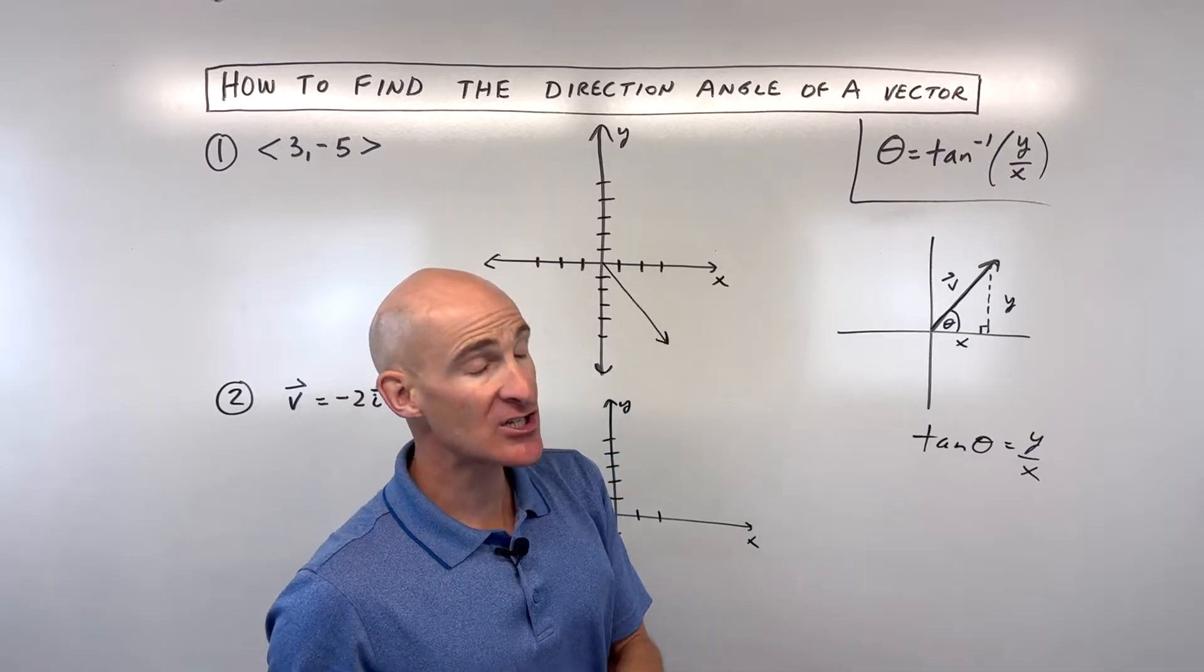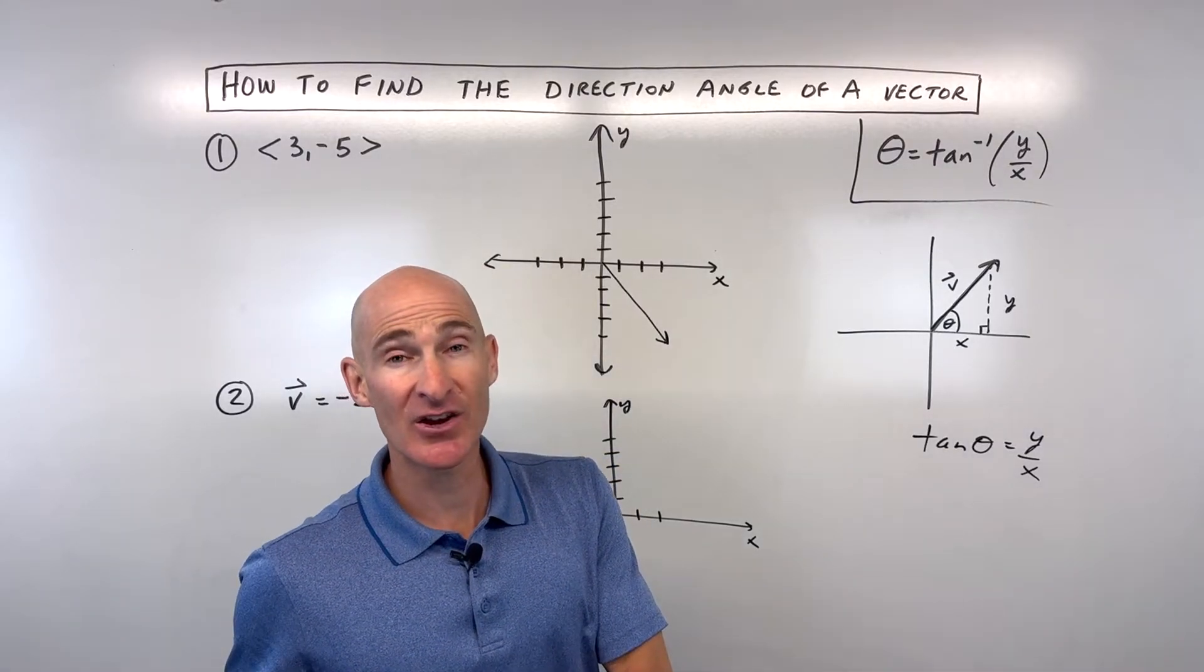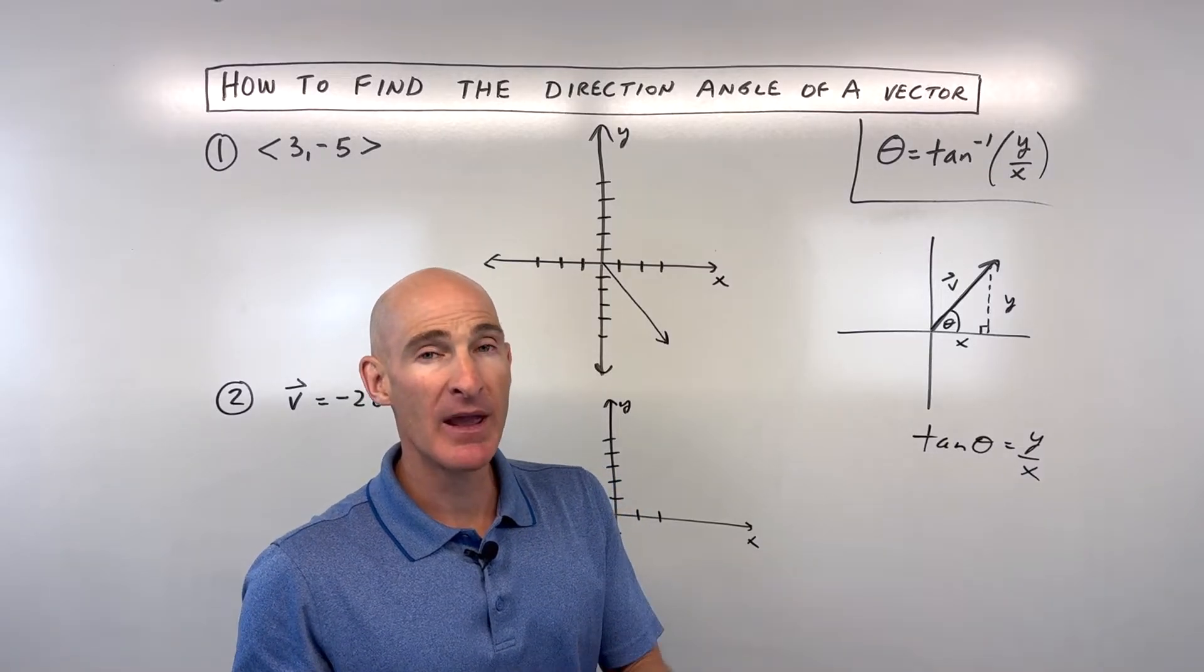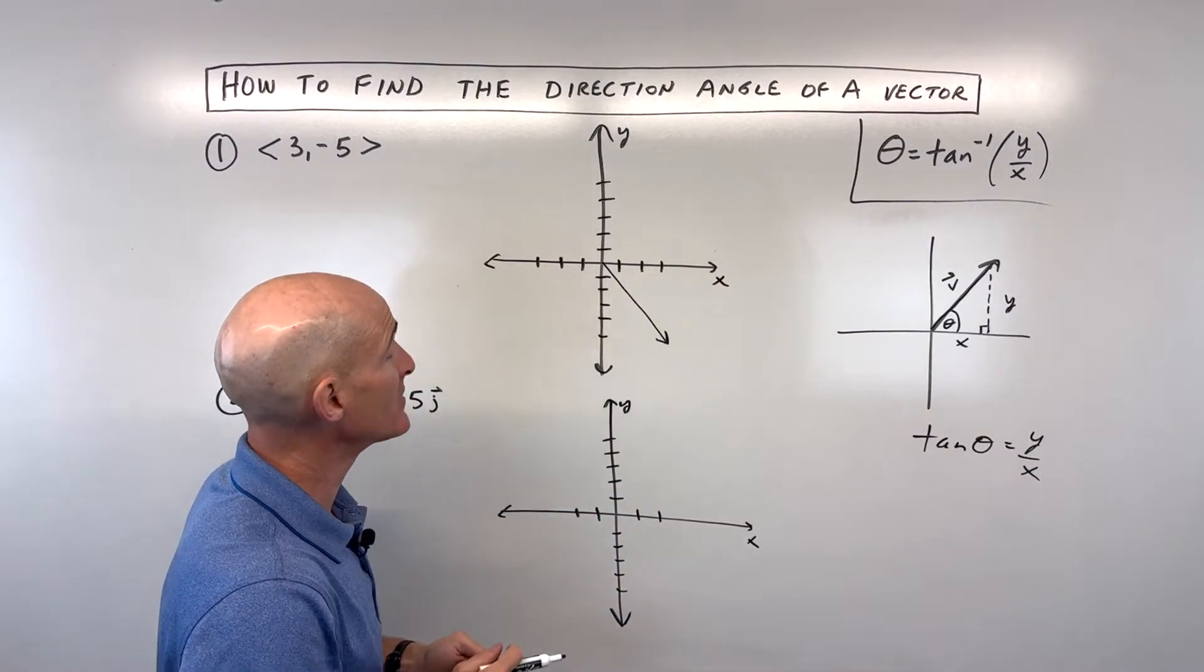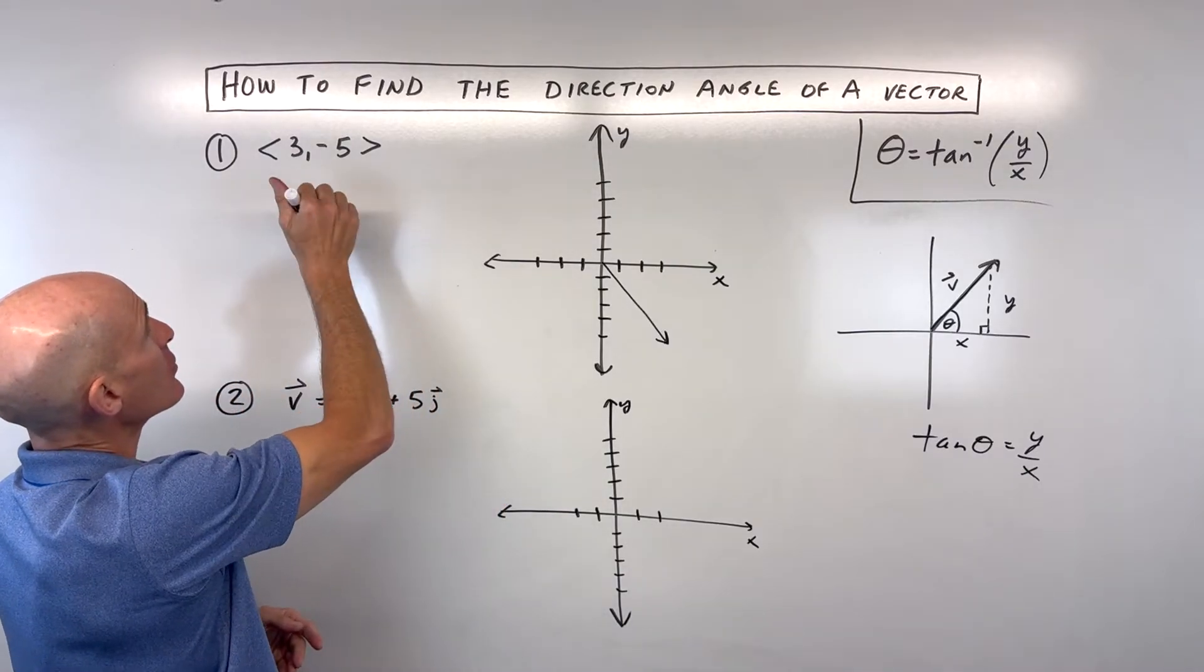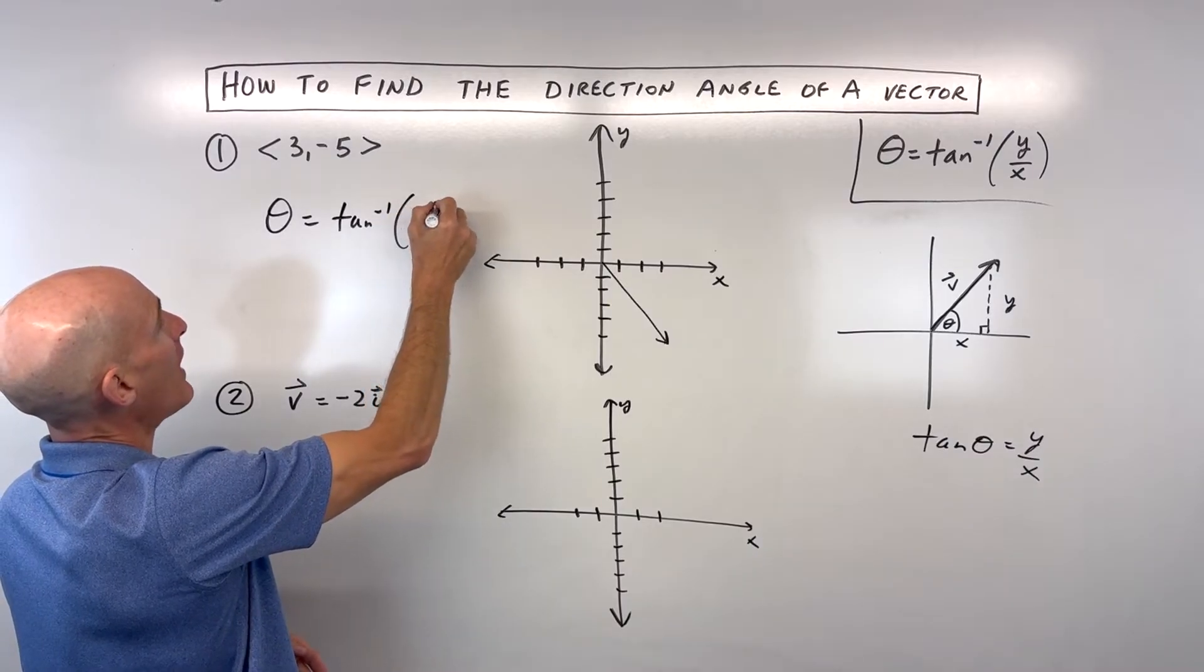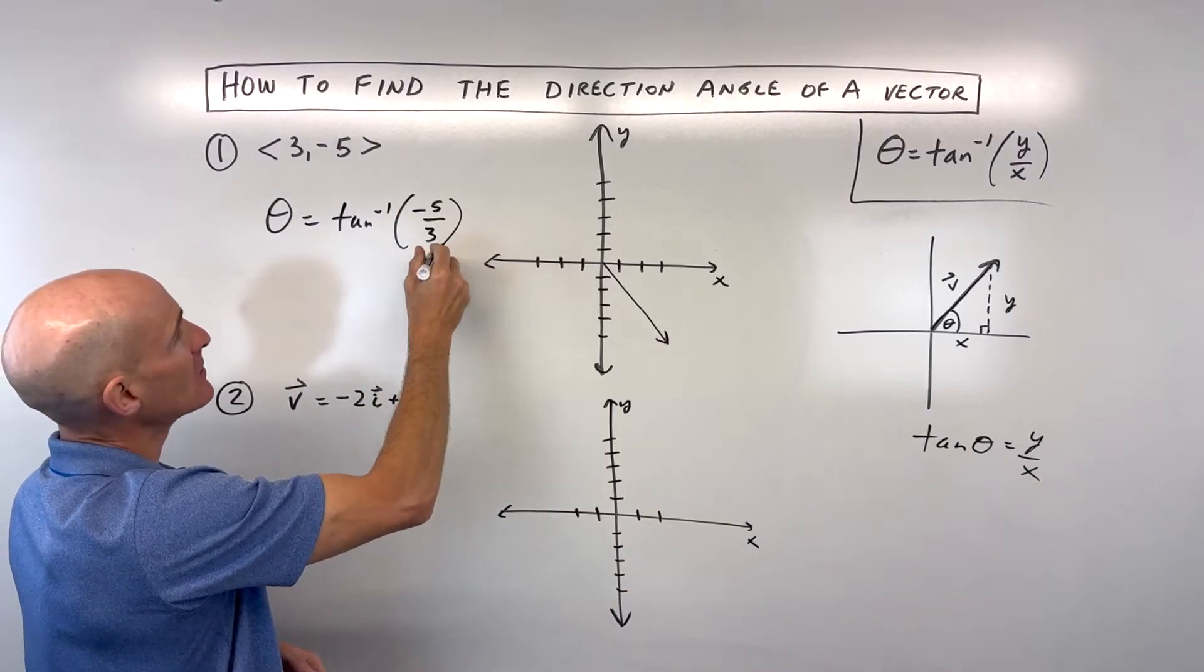The only catch is that sometimes that gives us the incorrect answer. And that's why it's helpful to sketch the vector and then make adjustments as necessary, which I'll show you in these three examples. So here, when we look at the angle theta, I'm going to say the tangent inverse of y over x.